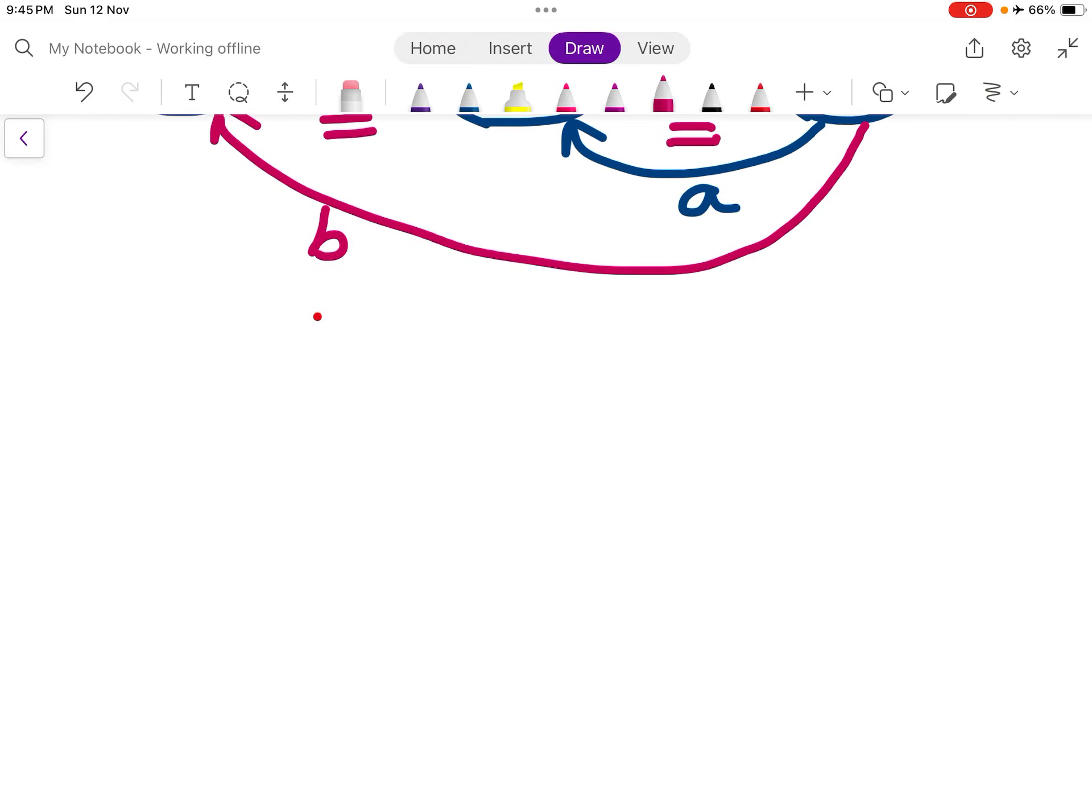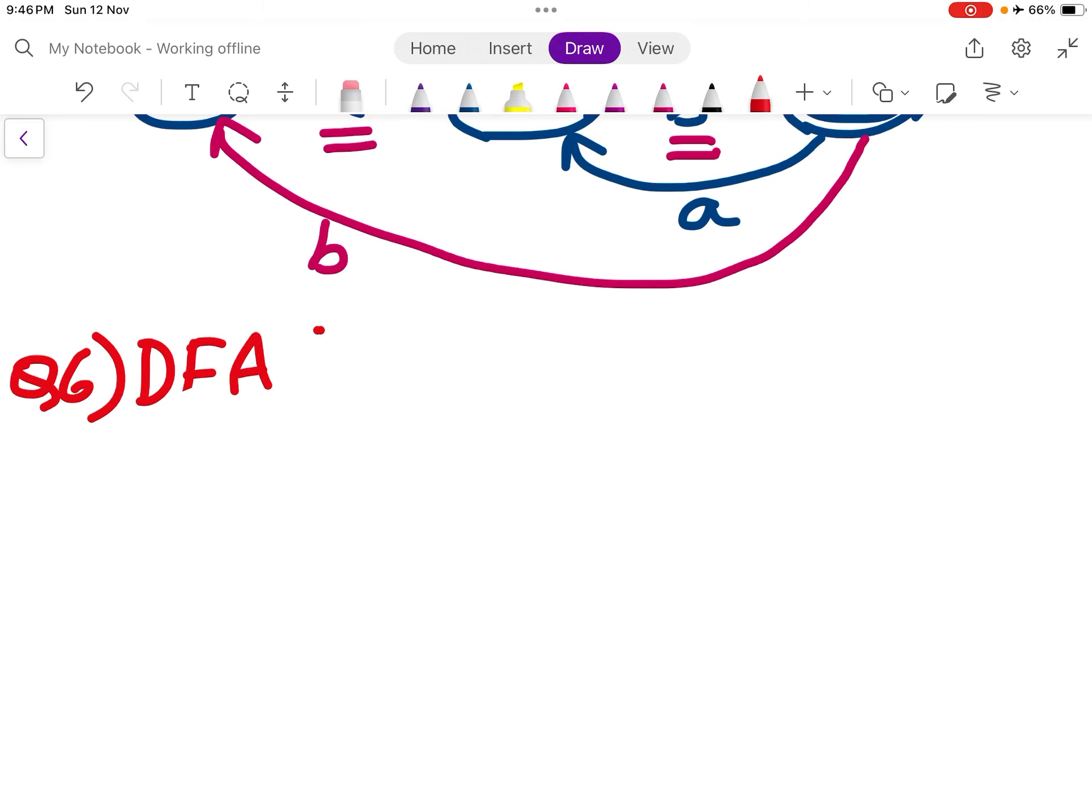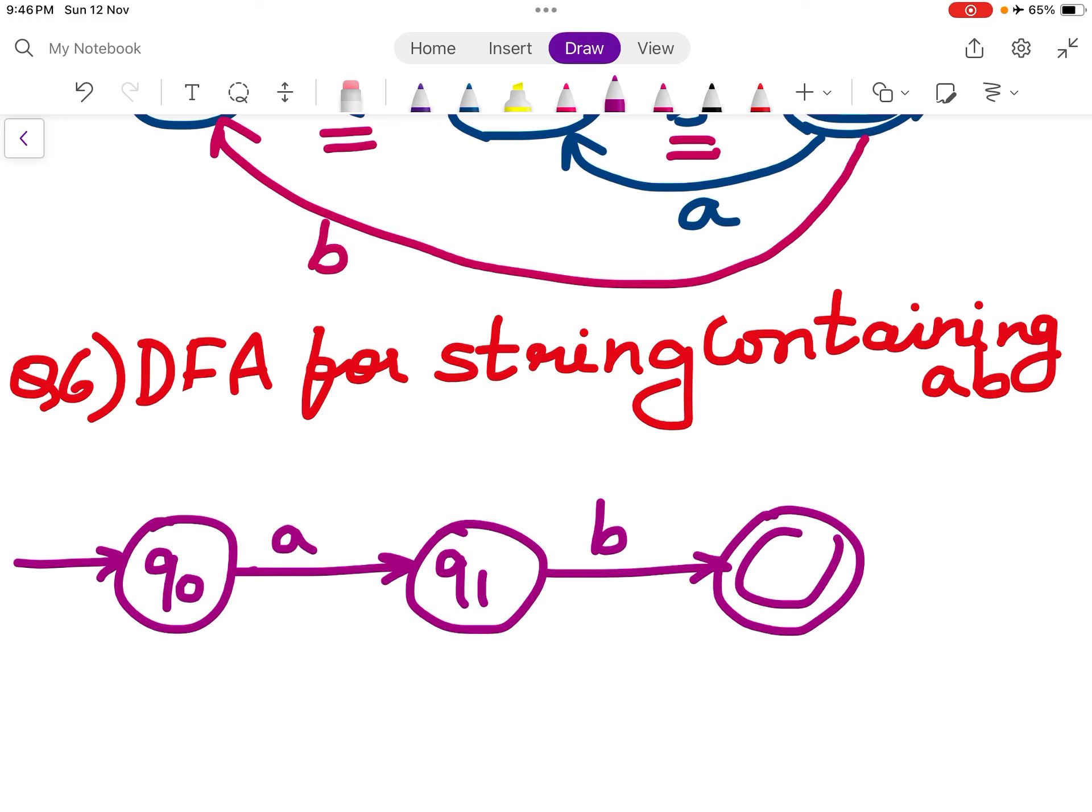This was for string ending with AB. DFA for string ending with AB. Q0 A to Q1, B to Q2. If there is a B I will loop over because I will find A and B. In Q1 if I find the A again I will loop over because I need a B now. In Q2 I will again loop over if I see A or B because I have already seen AB so it is going to go in the final state.